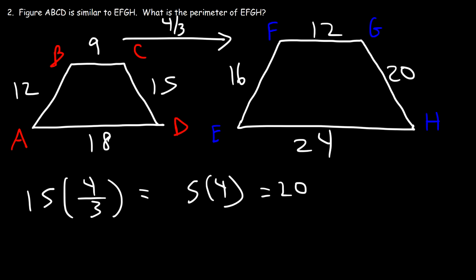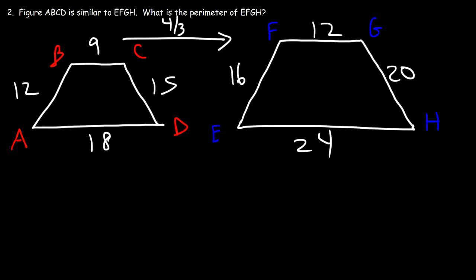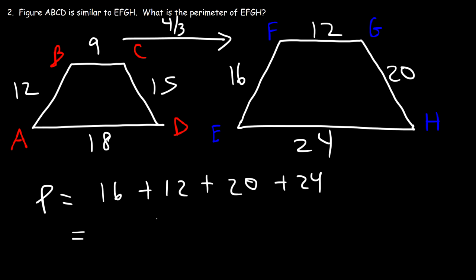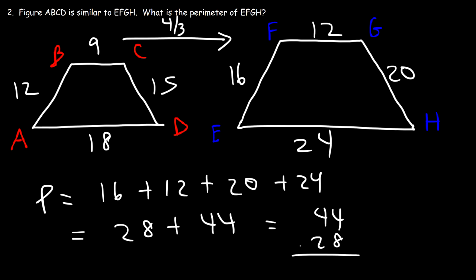That's a simple technique — calculate the enlargement ratio first, then use it to find the other sides. Now let's calculate the perimeter of EFGH: 16 plus 12 plus 20 plus 24. Sixteen plus 12 is 28, 20 plus 24 is 44, and 28 plus 44 is 72 units.